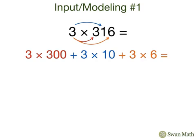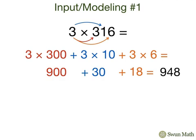3 times 300 is 900, 3 times 10 is 30, and 3 times 6 is 18. When we add these together, we get 948. So our product, 3 times 316, is 948.